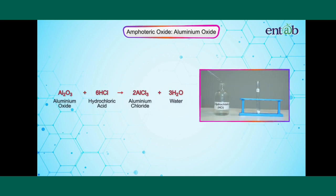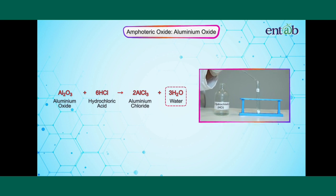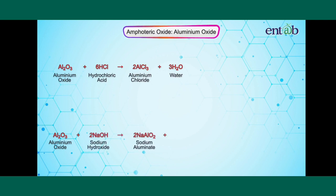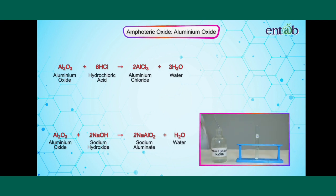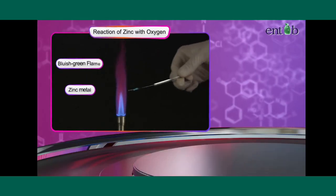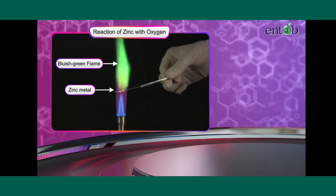Aluminium oxide reacts with hydrochloric acid, behaving as a basic oxide, to form a salt — aluminium chloride — and water. It also reacts with sodium hydroxide, which is a base, behaving as an acidic oxide, to form a salt — sodium aluminate — and water.